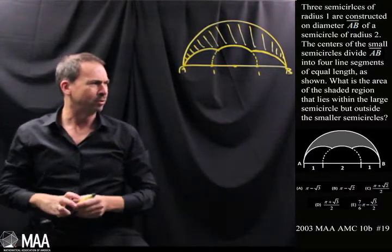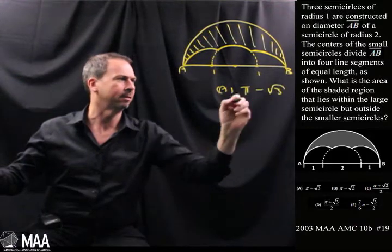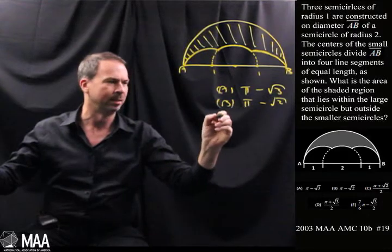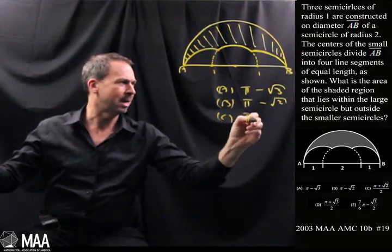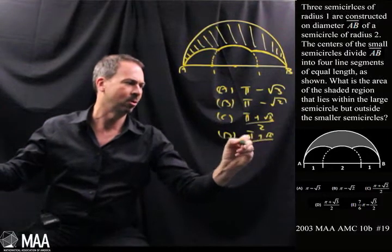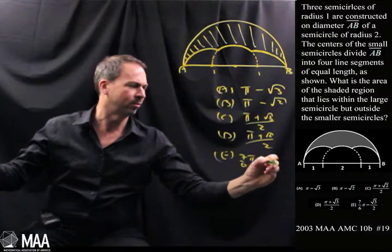And it gives five options which go as follows. Let me write them out here. I know they're on the screen but just for my own sake, I'm going to write them again. A is π minus √3, B is π minus √2. Option C is π plus √3 over 2 and option D is π plus √2 over 2 and option E is 7/6π minus √3 over 2.